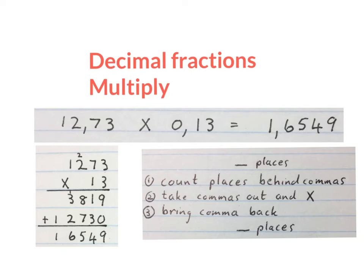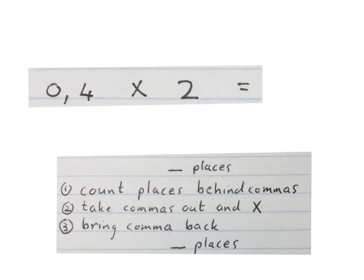Good day. In this video we're going to show you the three easy steps to multiply decimal fractions. When we multiply a decimal fraction sum, we're going to use these three steps: we're going to count the places behind the commas, take the commas out, then multiply, and bring the comma back.